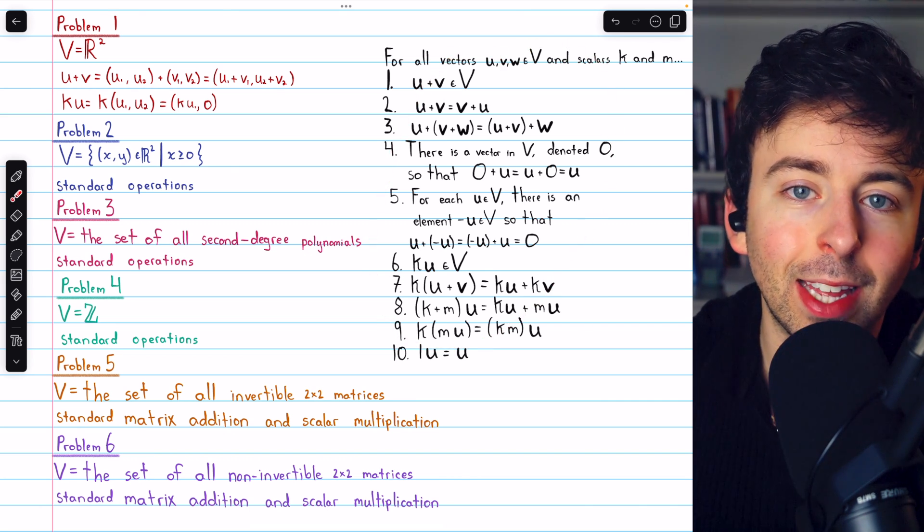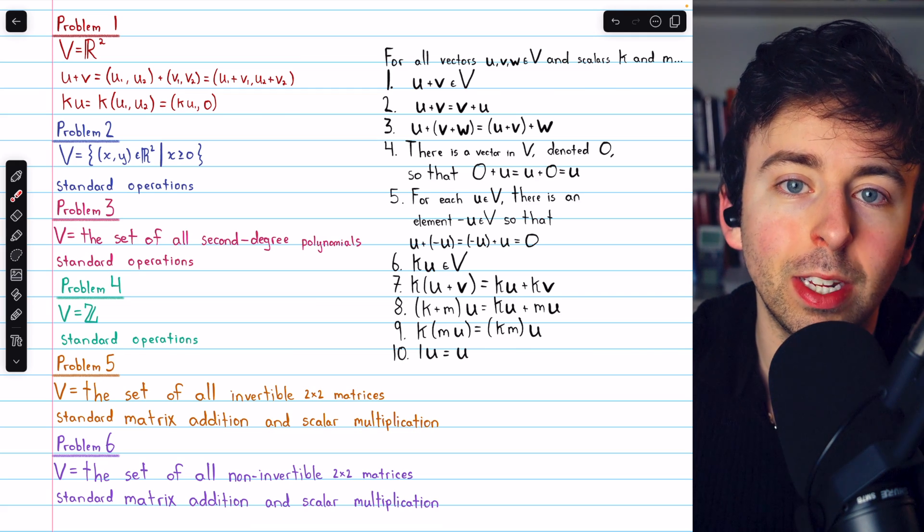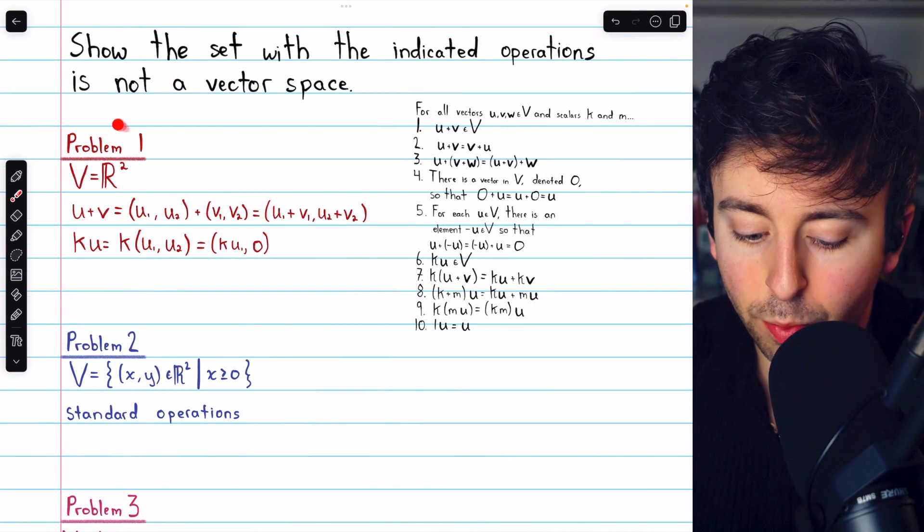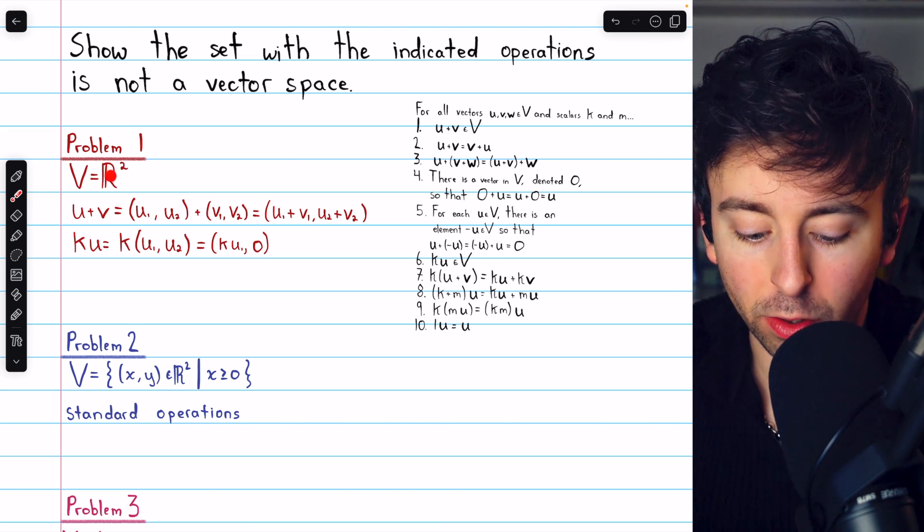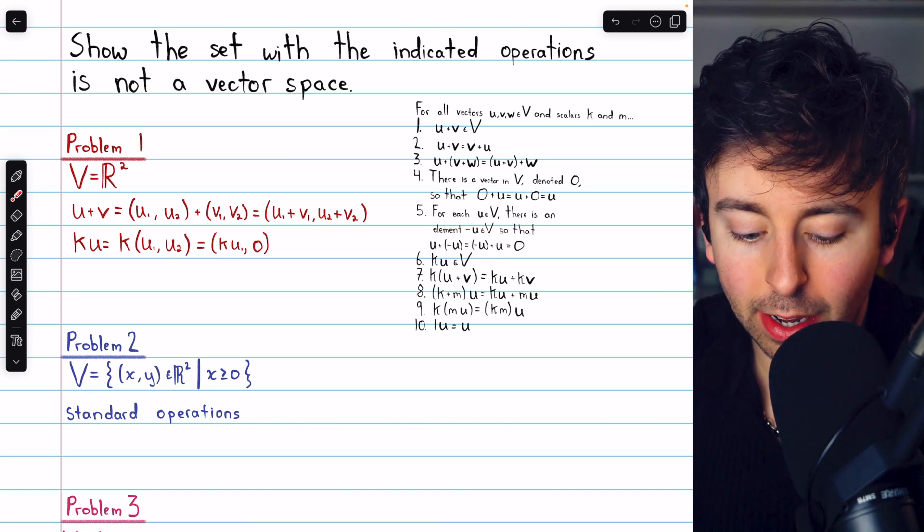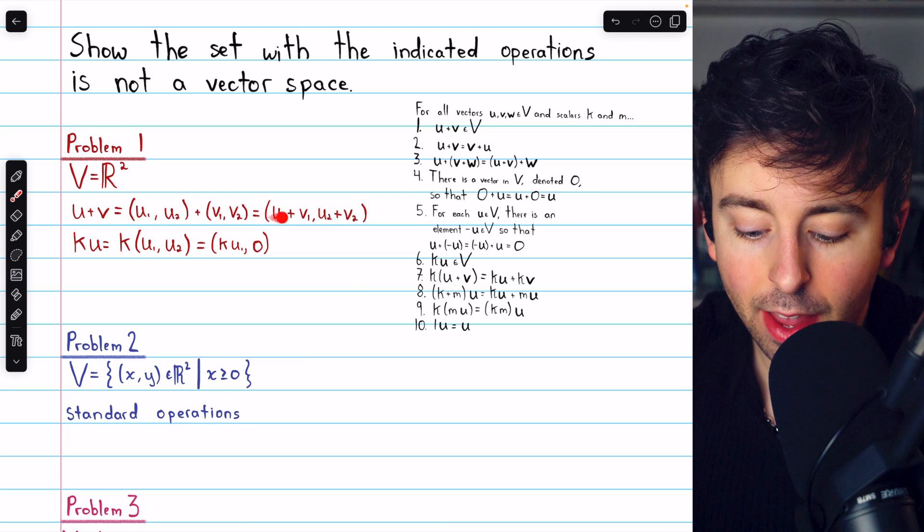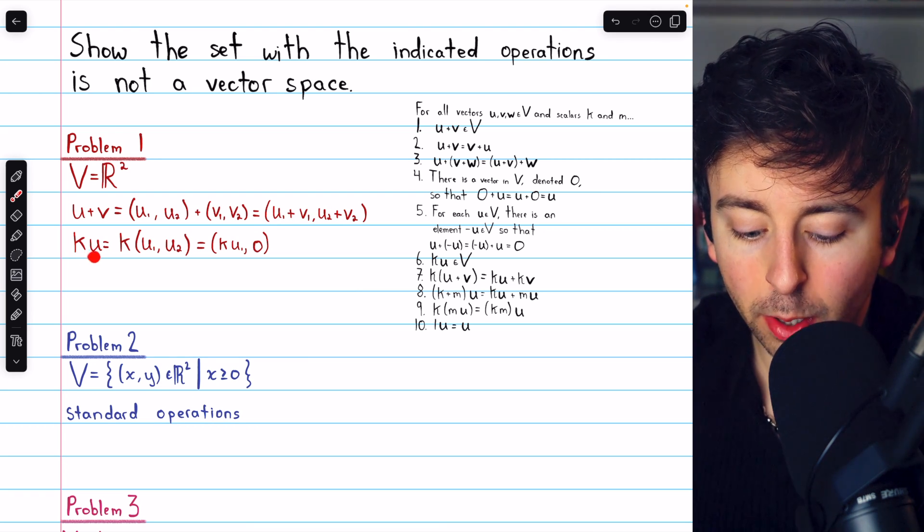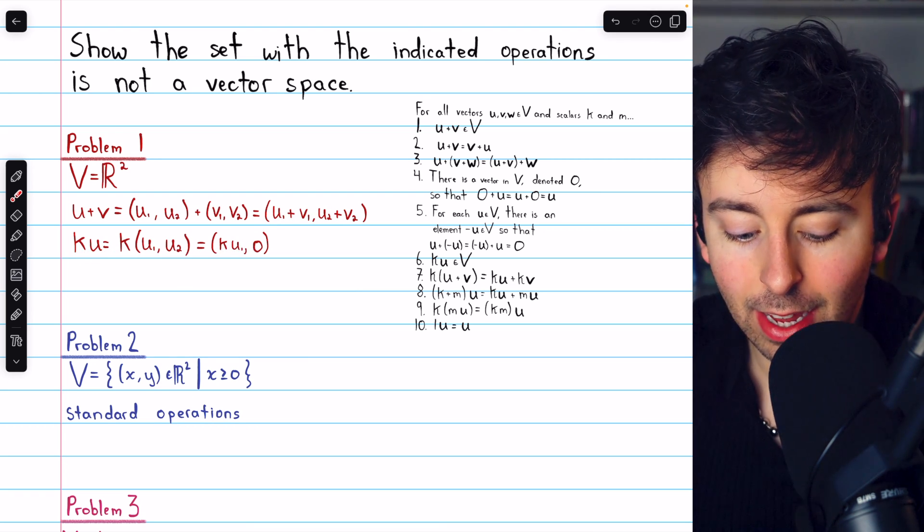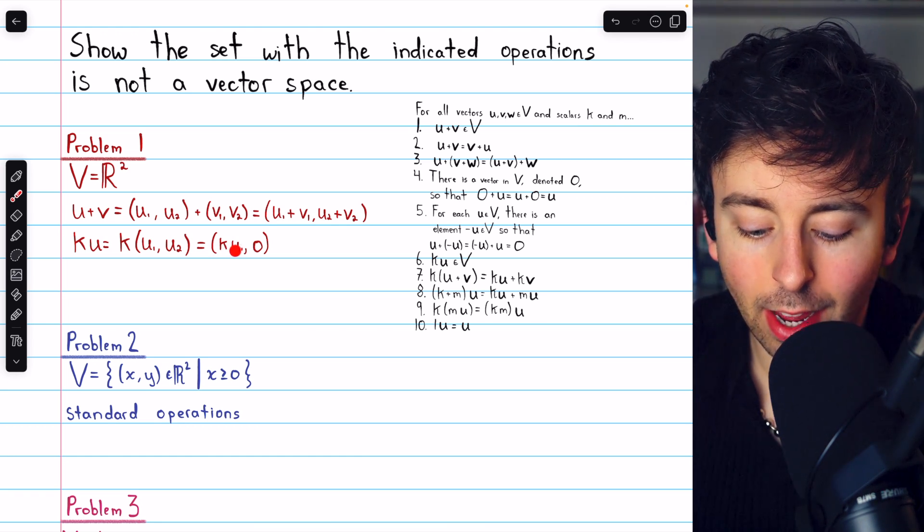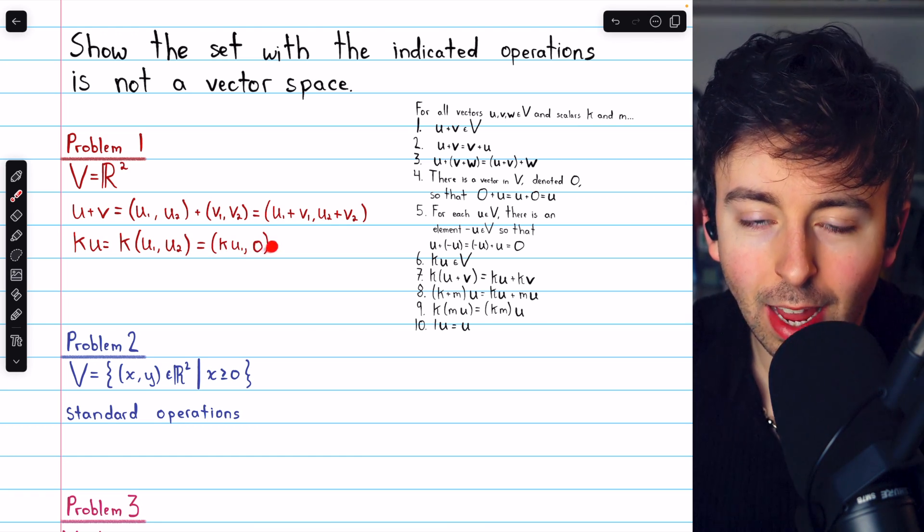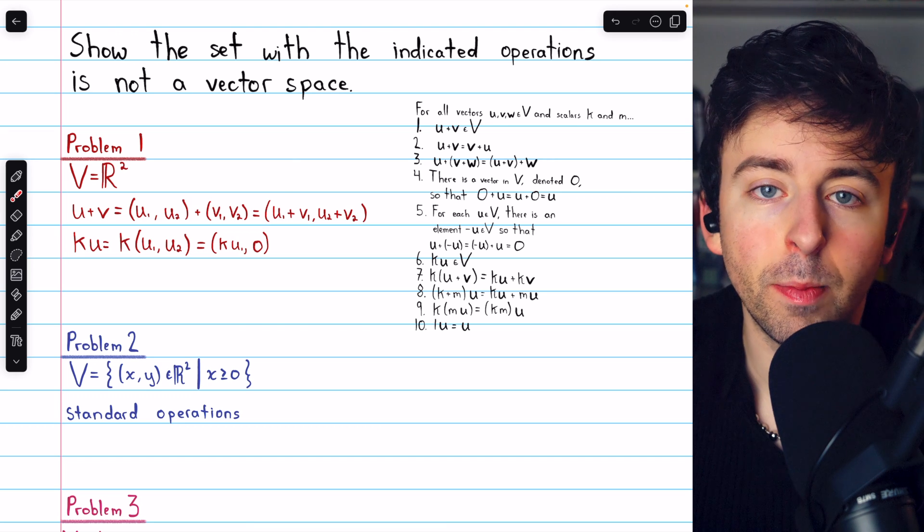I'll leave a link in the description to my lesson introducing vector spaces if you need to review that. Let's get into it with problem one. In this situation, the set is R squared, and the vector addition is defined as usual. However, scalar multiplication is defined like this: k times the vector u is equal to k times the first component, but the second component is forced to be zero.